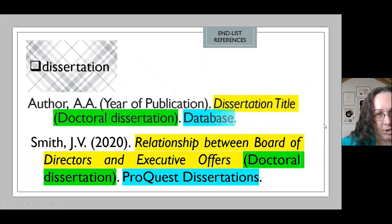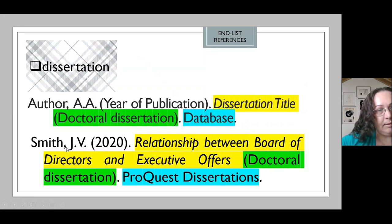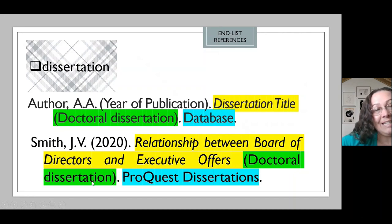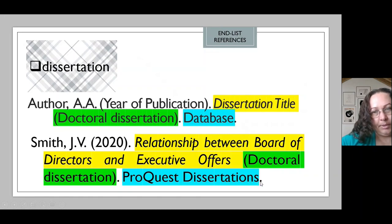Dissertations. When citing dissertations, we're going to enter the information of the author in the same order: last name, comma, first initial, period, middle initial, period, in parentheses enter the year of publication, period, space, the title of the dissertation in title case and italicized — do not place a period — in parentheses add the note 'Doctoral dissertation' or 'Dissertation', close parentheses, period. Then the database where this dissertation appears, period.